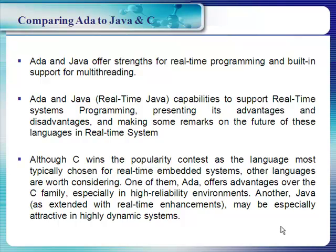Although C wins the popularity contest as the language most typically chosen for real-time embedded systems, other languages are worth considering. One of them — ADA — offers advantages over the C family, especially in high-reliability environments. Java may be especially attractive in highly dynamic systems, with both ADA and Java offering strengths for real-time programming and built-in support for multi-threading.